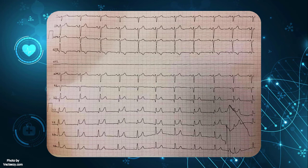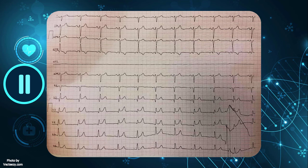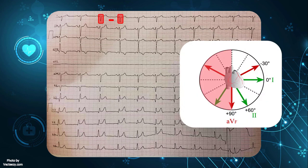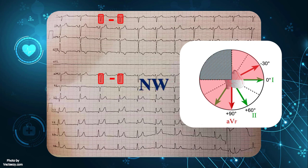In the last example, pause the video and write your own answer before we go through it together. Here, lead 1 is electrically negative. According to the three-lead method, we should now examine AVF. AVF is also negative. Therefore, northwest axis is present.